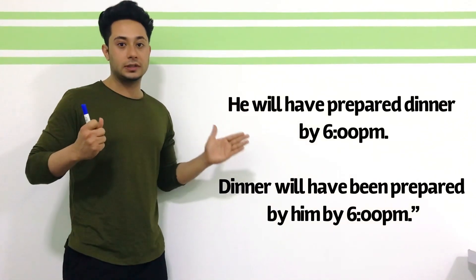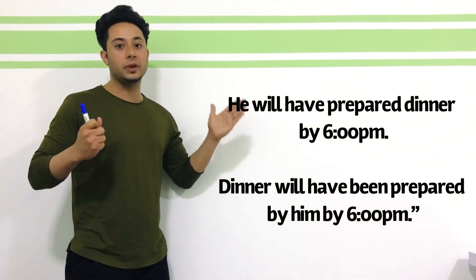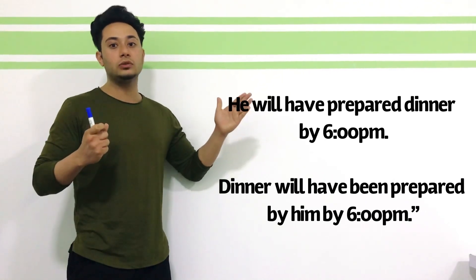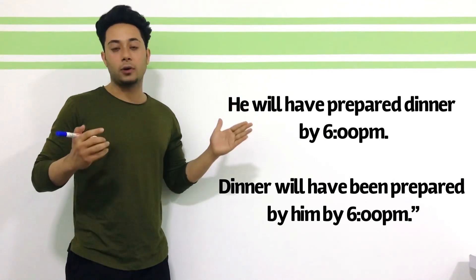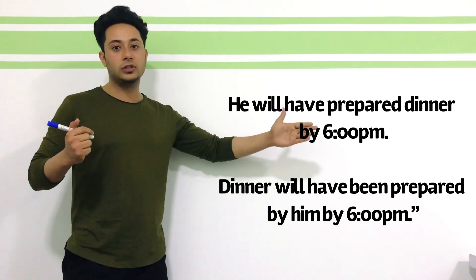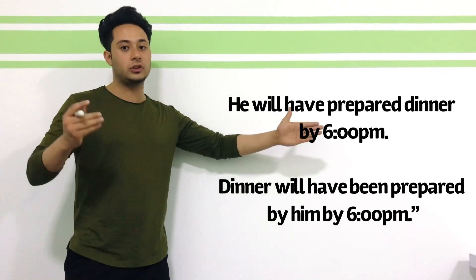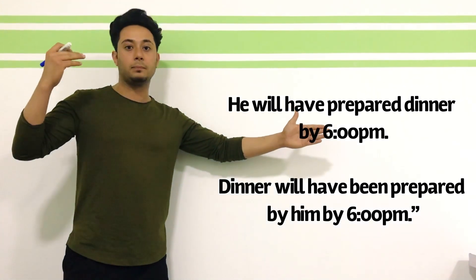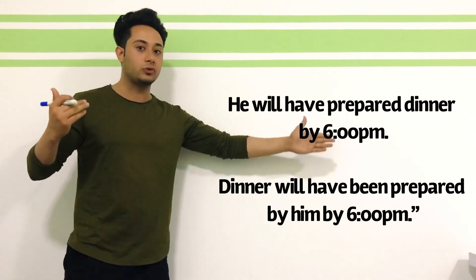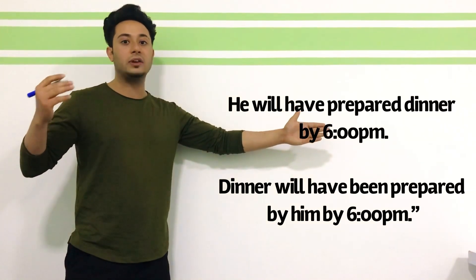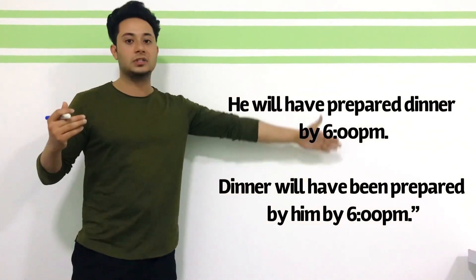It means first you need to mention dinner, after that you need to mention will have been, after that you need to mention the third form of the verb. After that, if there is any by phrase, you can mention the by phrase at the end of your sentence. Or if you have any other part in your sentence, you can mention them at the end.